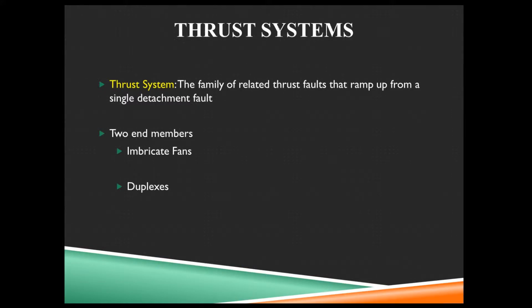So that brings us up to thrust systems. A thrust system is simply a family of related thrusts that ramp up from a single detachment fault. A thrust system is a bunch of thrust faults that are all related — they started to form together. There are two different end members: an imbricate fan or a duplex in its purest form are the extreme cases, but reality suggests we have a mix of the two a lot of the time. These are the two textbook cases — the two perfect examples of what get mixed together to form all the real cases.